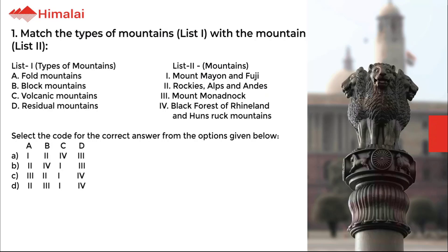List 2: 1. Mount Fuji, 2. Rockies, Alps and Andes, 3. Mount Monadnock, 4. Black Forest, Rhine and Hunsruck Mountains. Select the code for the correct answer from the options given below. The correct option is B.